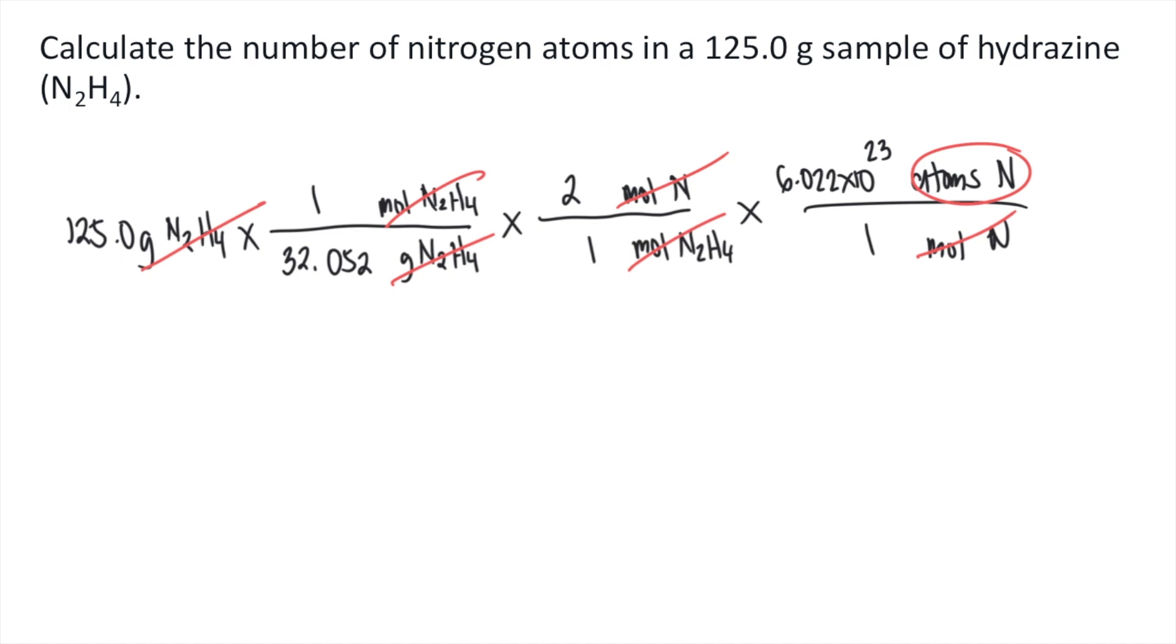Let's just summarize our calculation. You first multiply all the numbers on top. So we have 125.0 times 1 times 2 times 6.022 times 10 to the 23rd power atoms of nitrogen. Divided by, in the denominator,